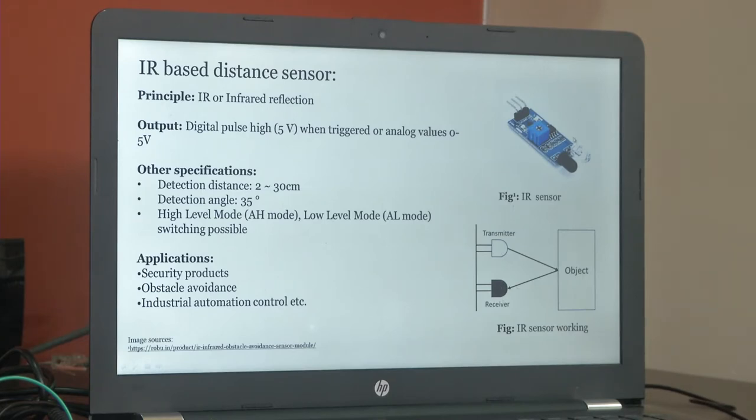So what happens is, you know that the light undergoes the reflection. So, when the transmitter sends the IR signal, if an object is there to reflect it, it will come back to the receiver. So based on the, this reflection, the receiver will get this IR light back and it will sense it, that is what happens in the sensor.